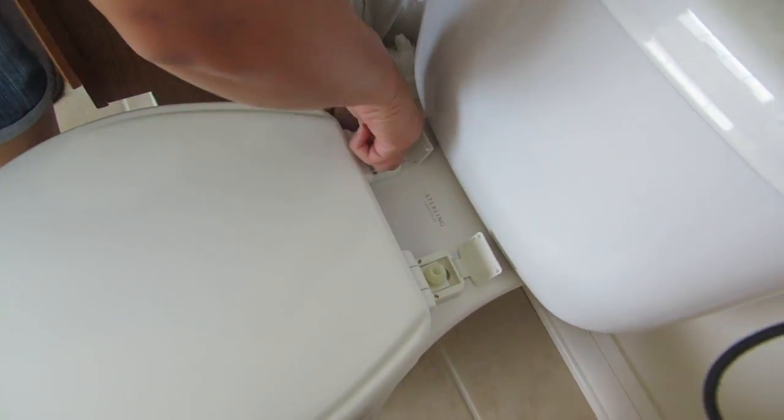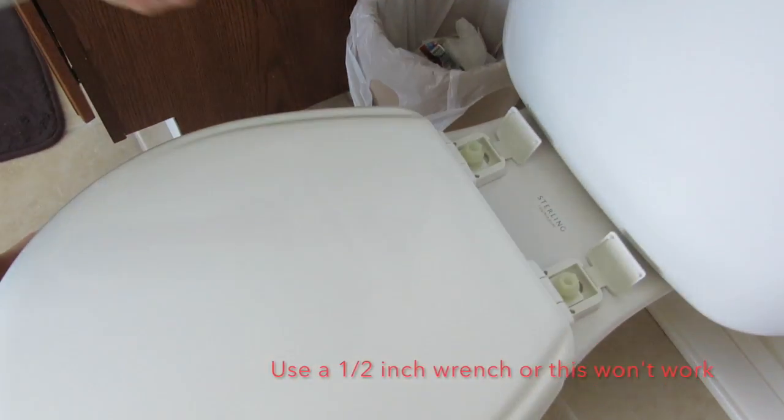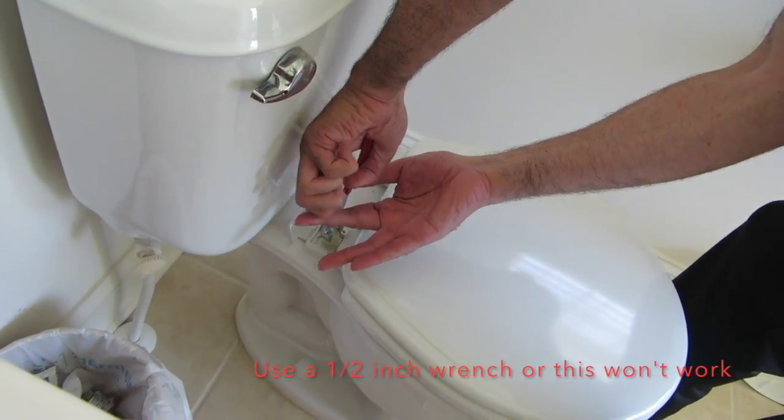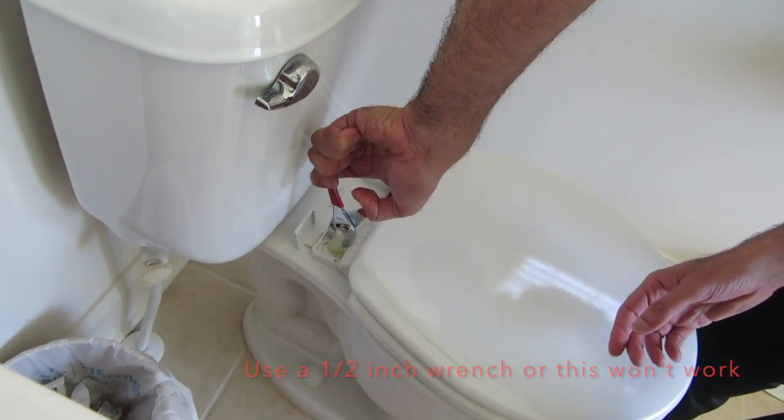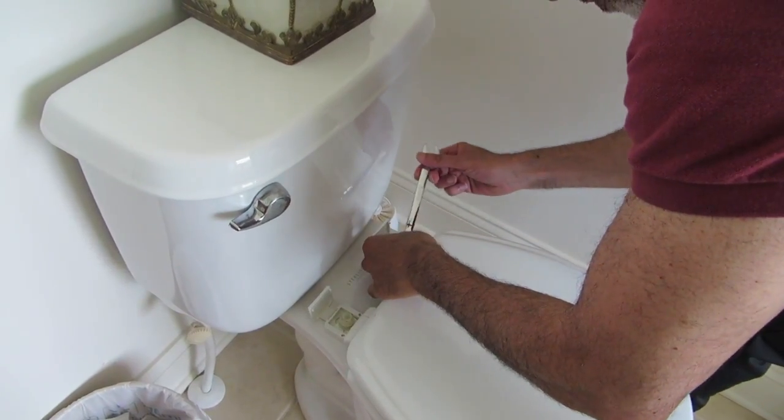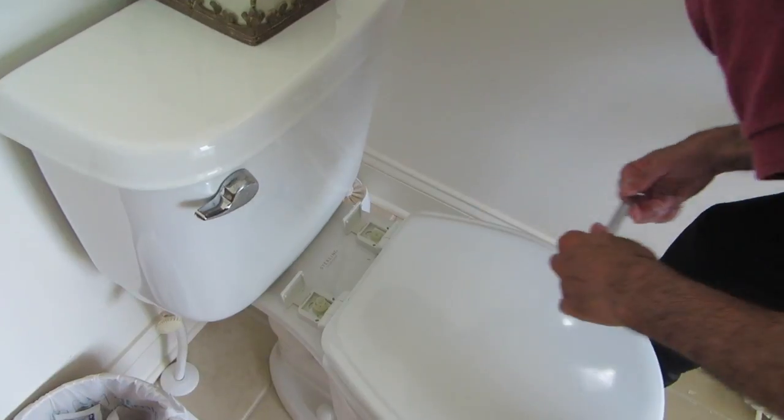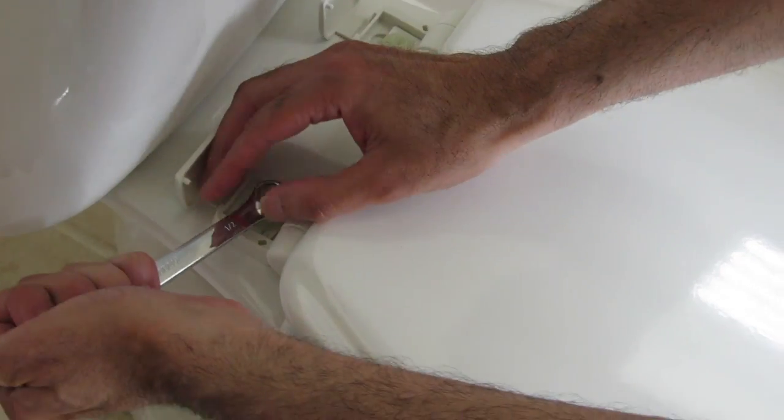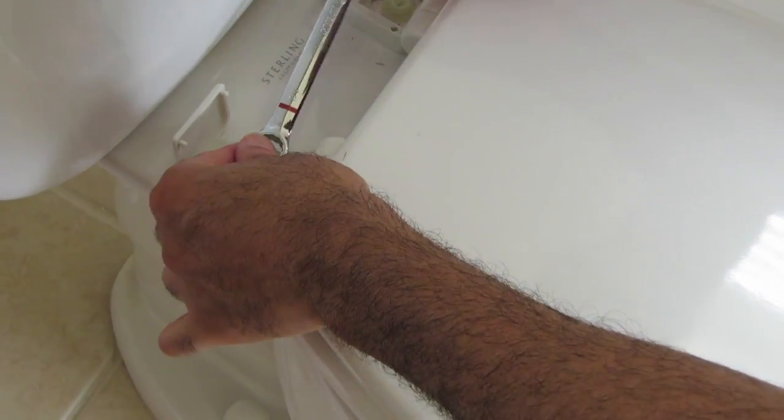So once you've finger tightened this bolt and your toilet seat is centered and looks good, you are going to get a wrench and tighten this. I had to call in the guy with the muscles, so let's see if he can do it. Alright, so we had to go get that half-inch wrench. There it goes. It snapped off.